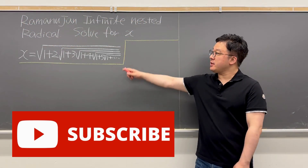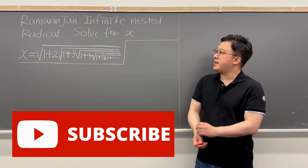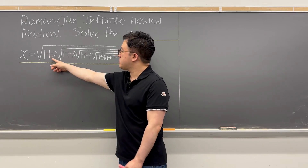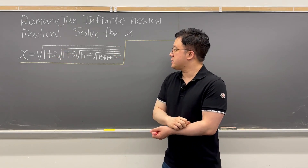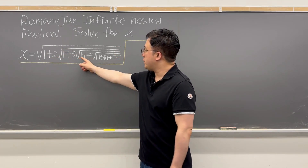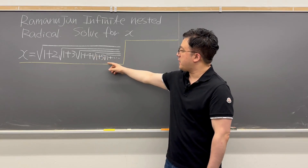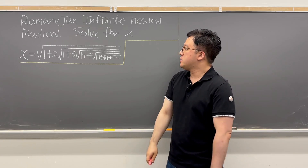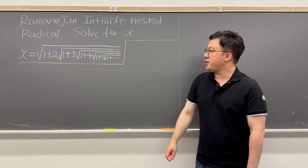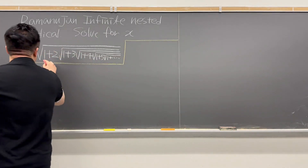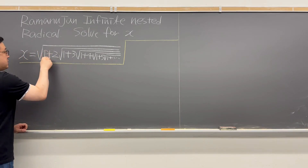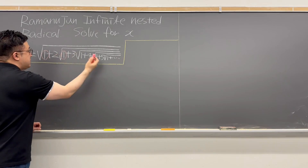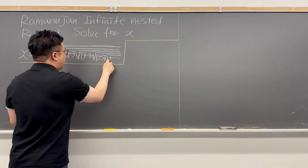Okay guys, welcome back. So I'm looking at this interesting Ramanujan infinite nested radical. The question is: solve for x, where x is equal to the square root of 1 plus 2 times square root of 1 plus 3 times another square root of 1 plus 4 times square root of 1 plus 5 times square root of 1 plus — and this pattern will continue.